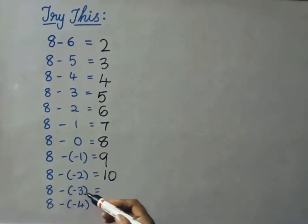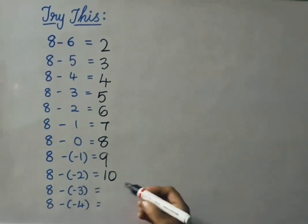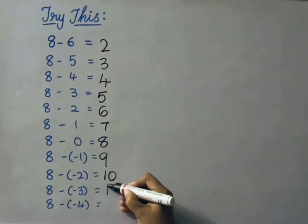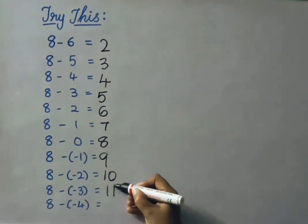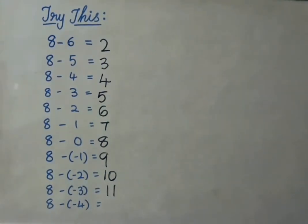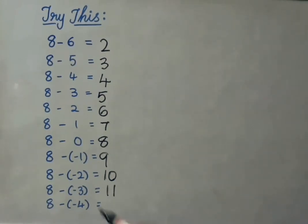Next, 8 minus of minus 3 — that means 8 plus 3, that is 11. Next, 8 minus of minus 4 — that means 8 plus 4, that is 12.